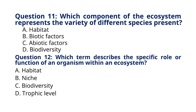Question 12. Which term describes the specific role or function of an organism within an ecosystem? A. Habitat. B. Niche. C. Biodiversity. D. Trophic level. The correct answer to question 12 is option B, Niche. Explanation: A niche refers to the specific role or function of an organism within its habitat, including its interactions with other species and its use of resources.